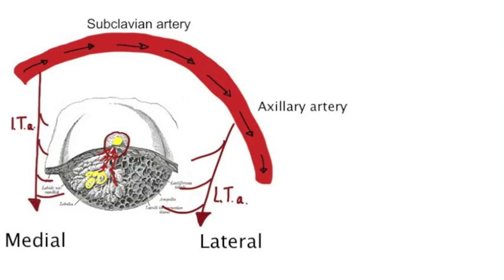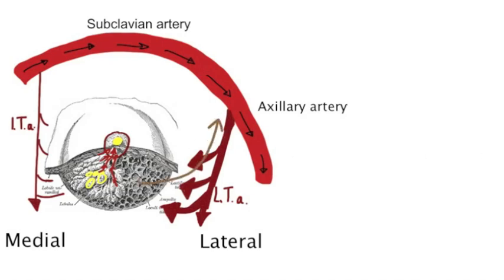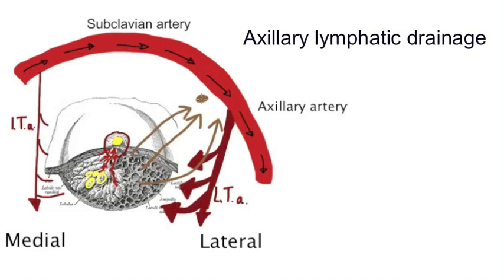Since most of the breast is supplied by the lateral thoracic artery, which comes from the axilla, the lymphatics follow this and drain mostly to the axillary nodes. Hence, breast cancer will often metastasise to these nodes.